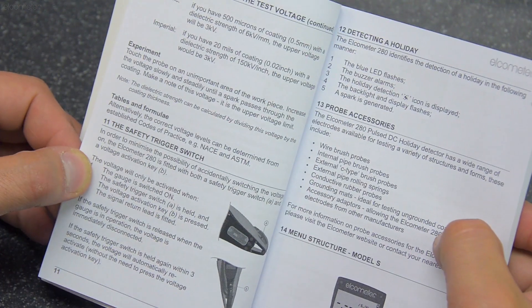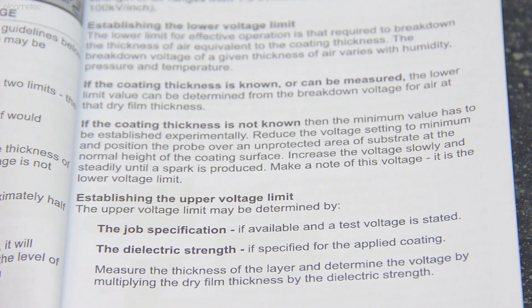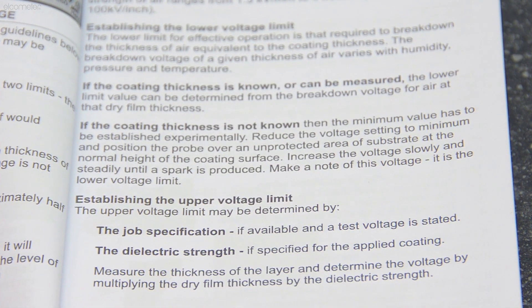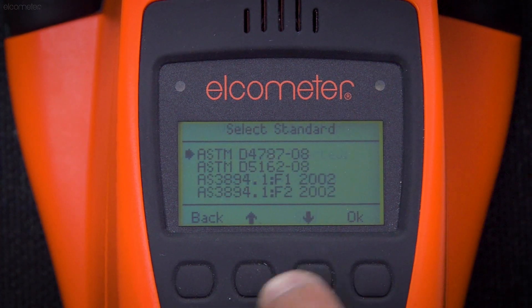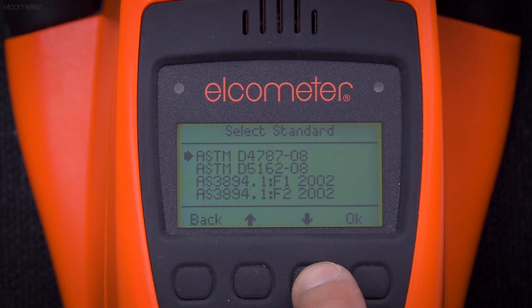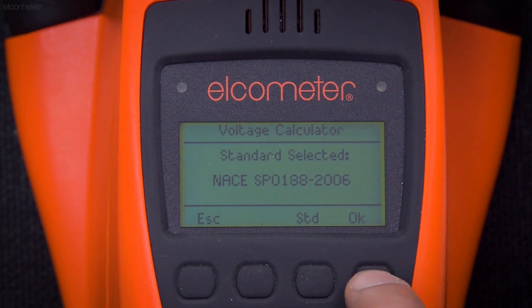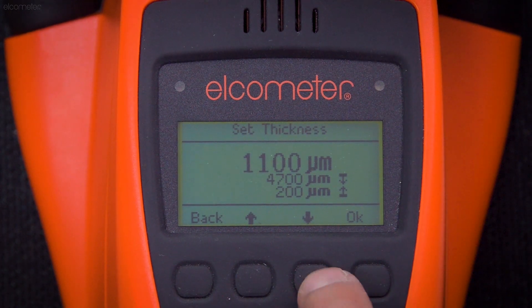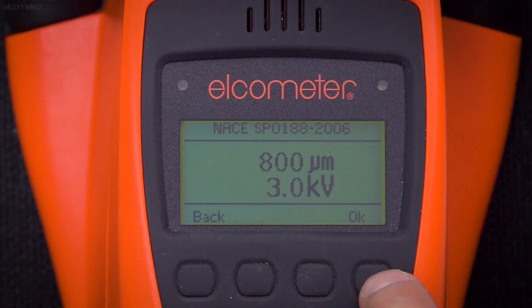If you're working to a specific test method or standard, the correct voltage levels can be worked out using established codes of practice. However, the Elcometer 280 makes working out your test voltage easier than ever before, with its in-built voltage calculator. Simply choose your test standard, enter the specified coating thickness, and the gauge will automatically calculate and set the correct voltage.